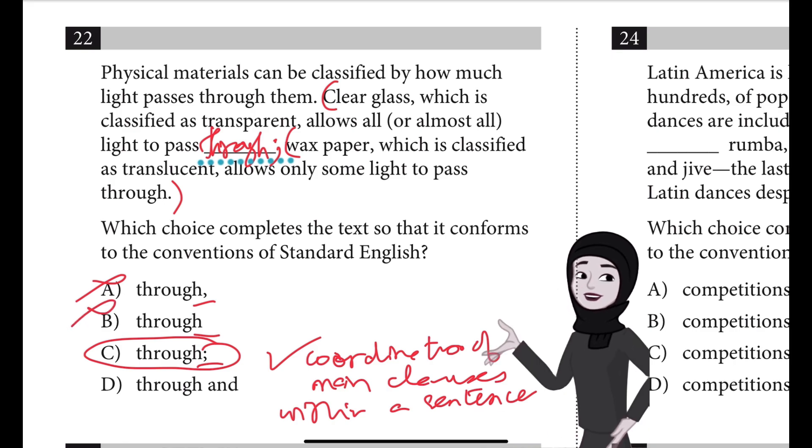B is incorrect because it results in a run-on sentence. The two main clauses—clear to through and wax to through—are fused without punctuation and/or a conjunction. Furthermore, it results in a confusing and illogical sentence that suggests clear glass allows light to pass through wax paper, which doesn't make sense in this context.